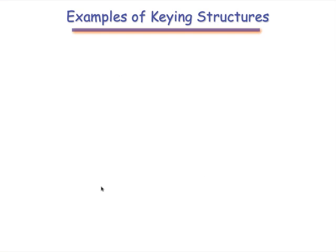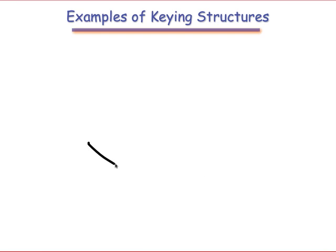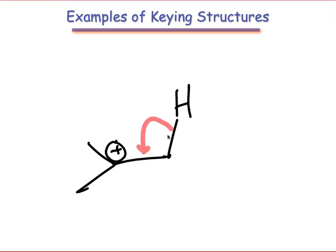On the other hand, cations next to groups that can depart by leaving behind electrons, such as H-plus or carbocations, are well suited for the 1,2r or DE steps. Here's an example of one such substrate.